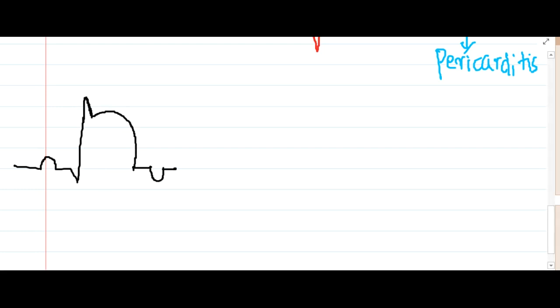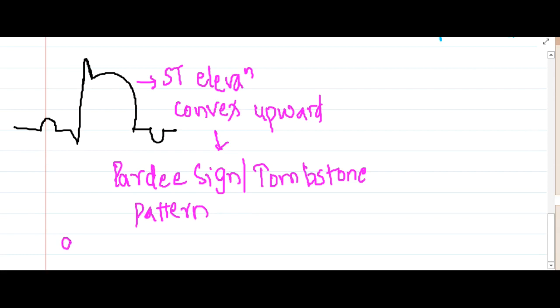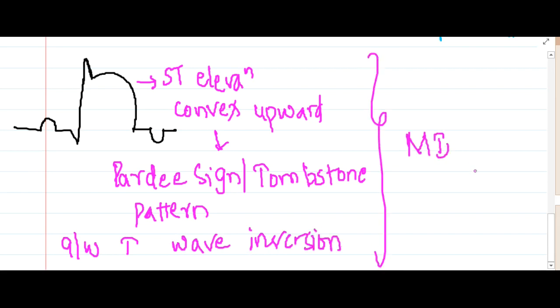This ST segment elevation is convex upwards and we have the name for this, which is called Pardee sign or it looks like a tombstone. It is also called tombstone pattern. This is the ST segment elevation which is also associated with T wave inversion. This is present in myocardial infarction.